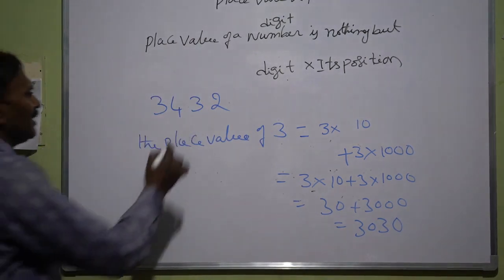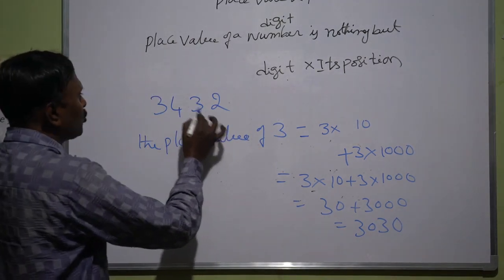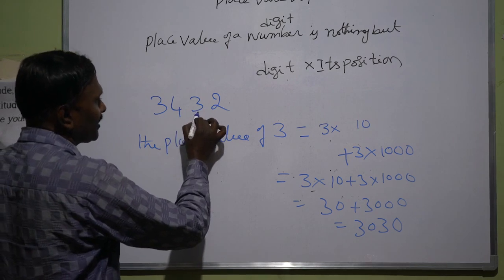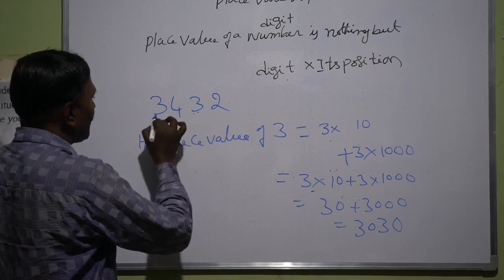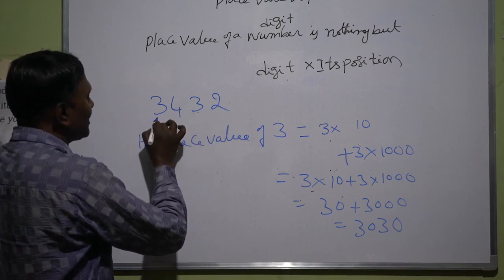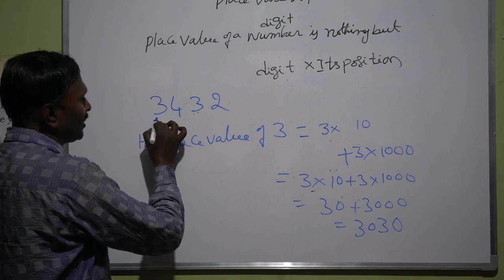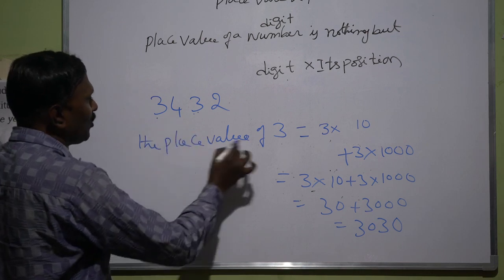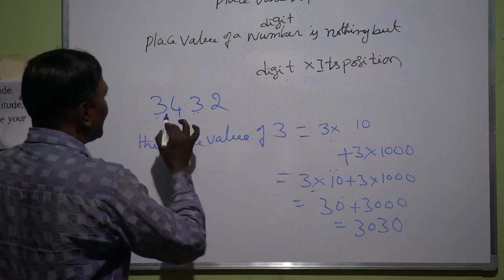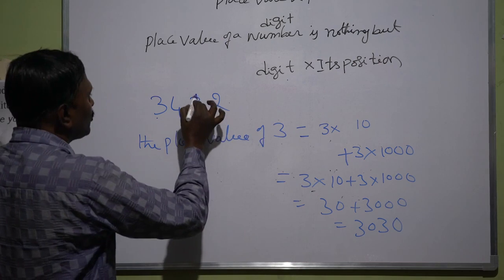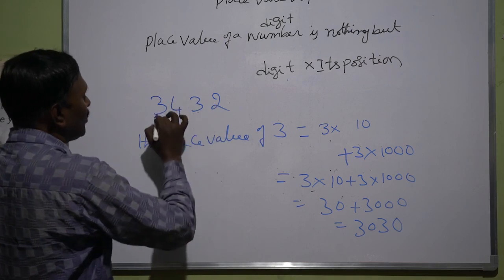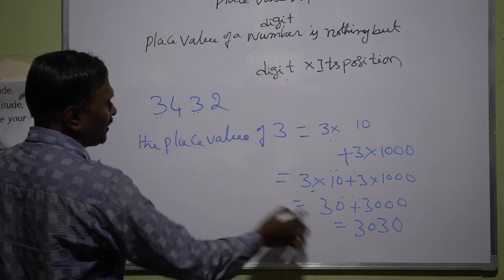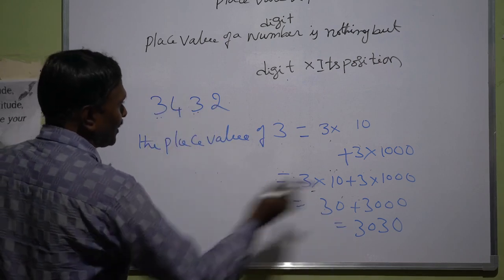So here the digit repeats 2 times. The place value of 3 is 30 in one position and 3000 in the other position. So the place value of 3 is the sum of the place values of 3, which means 3000 plus 30 equals 3030.